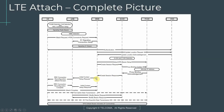The MME instructs the eNodeB via the S1AP protocol to set up an initial context for the subscriber. The eNodeB sends an RRC Connection Reconfiguration message, and at the NAS layer an Attach Accept message is sent to the UE. The UE responds with RRC Connection Reconfiguration Complete, and the eNodeB sends an Initial Context Setup Response to the MME. At this point the attach is complete on the network side and the UE is in a connected state.